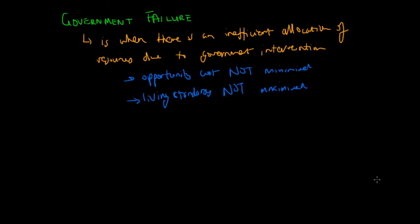As we can see from before, market failure occurs for many different reasons, and because the markets fail to allocate resources efficiently, sometimes the government has to step in. So let's look at the causes of government failure.